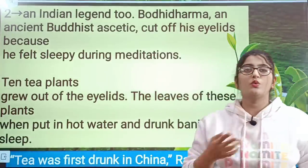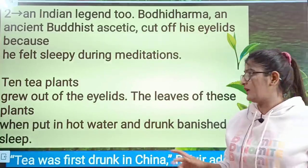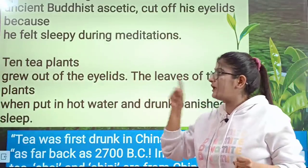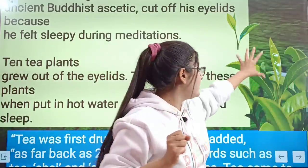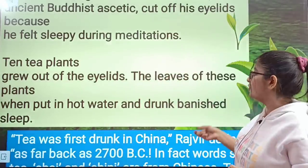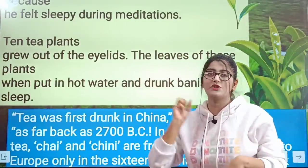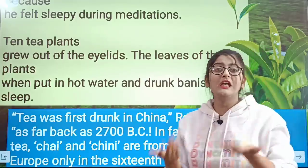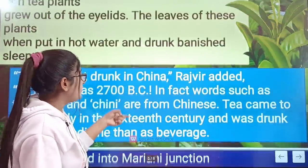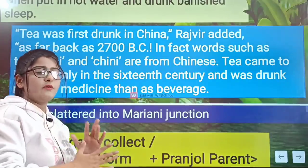The second is the Indian legend. It is said that a Buddhist monk named Bodhidharma was doing meditation, and during meditation he used to feel sleepy. So he cut off his own eyelids. From where his eyelids fell, ten tea plants grew up, and those tea plants helped banish sleep. This is the second legend — Chinese emperor and Indian Buddhist monk Bodhidharma.